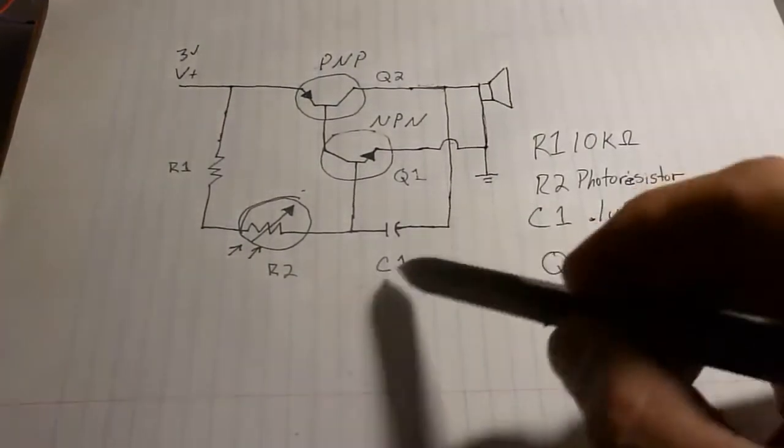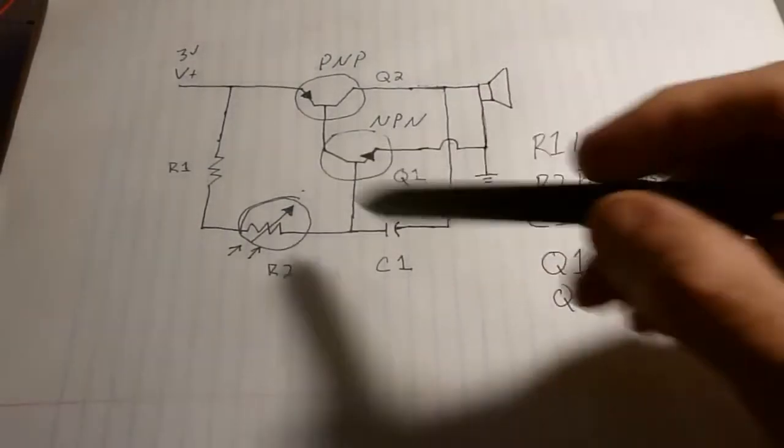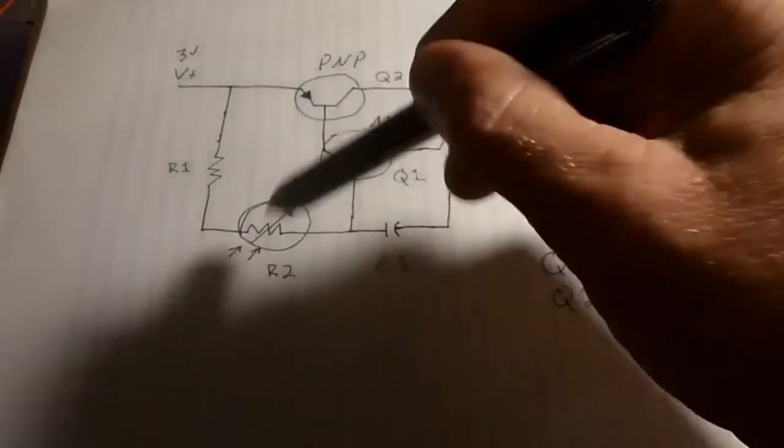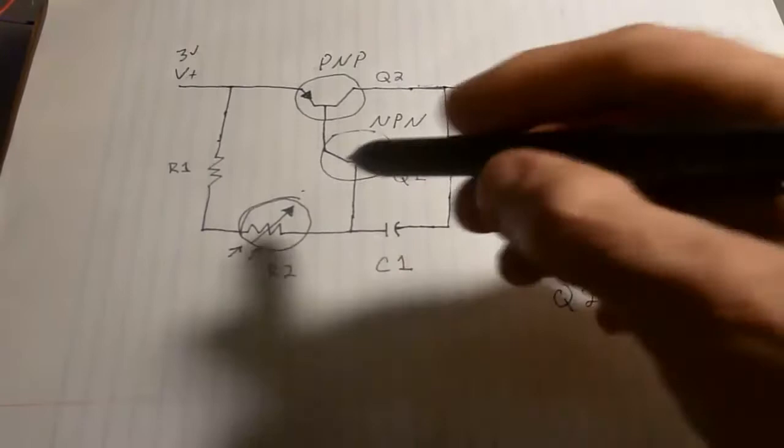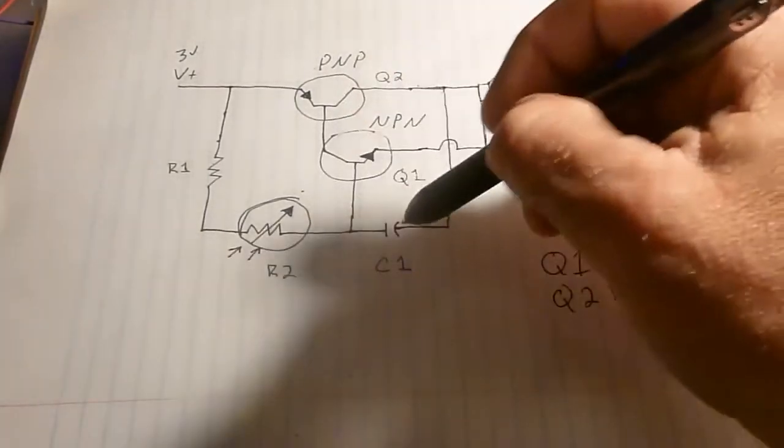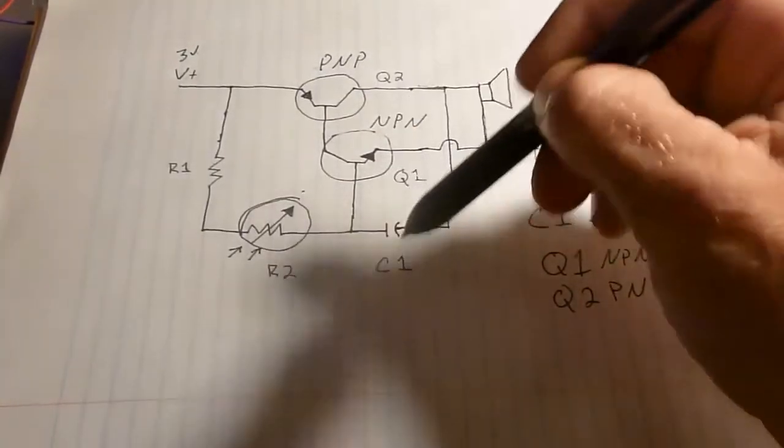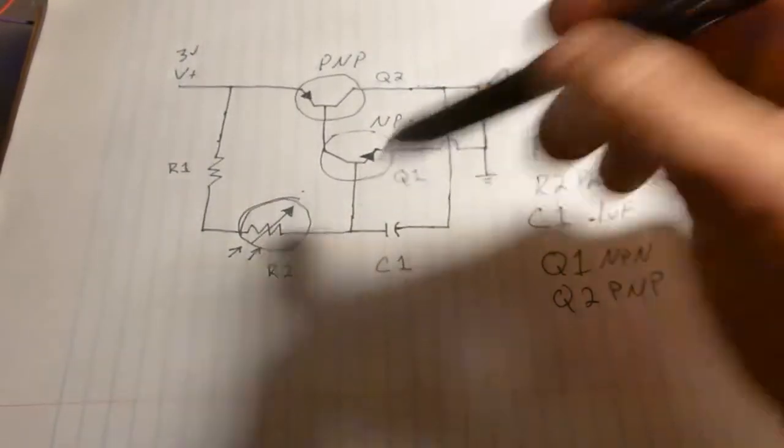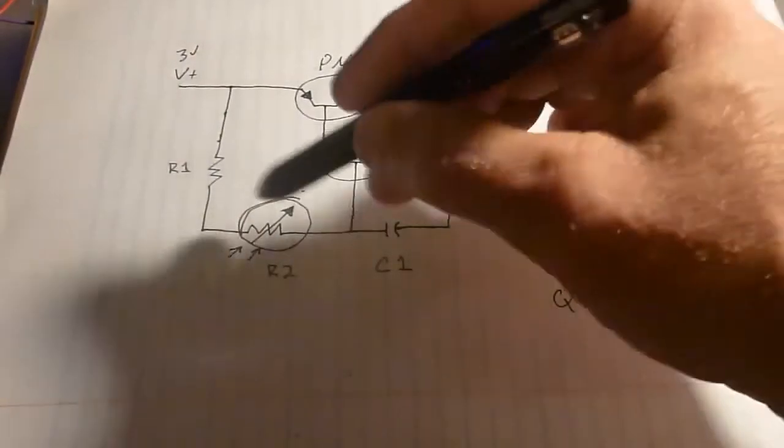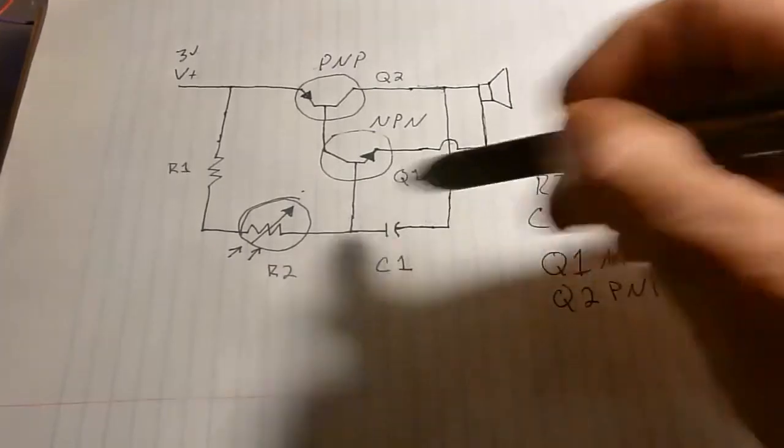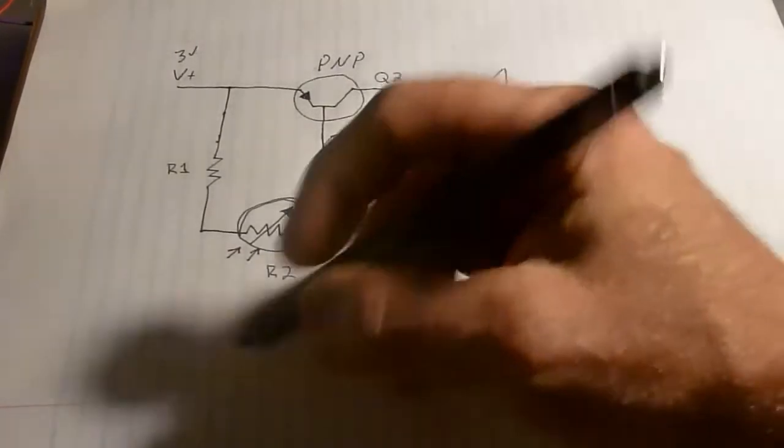The rate at which C1 charges is controlled by the photoresistor R2. So if you have no light, the charge of it will be very slow. And as you have more light, the charge will be faster because you'll have more current going through.